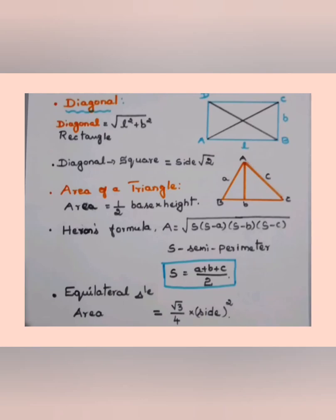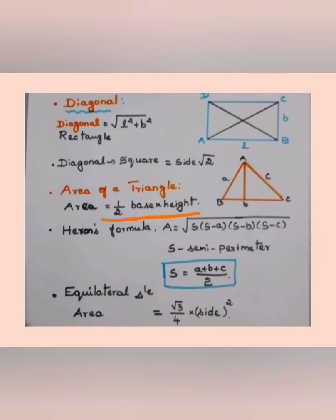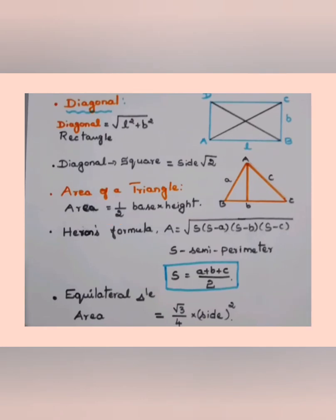To calculate the area of a triangle, the formula is: A = ½ × base × height. In triangle ABC, if BC is the base and AD is the height (where D is the foot of the perpendicular), you can calculate the area directly if base and height are given.